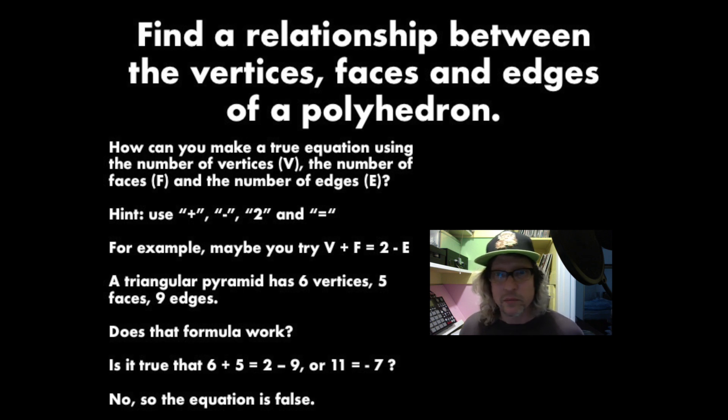Well, no, it doesn't. Because if I take the vertices, six plus the faces, five, I get 11. And then on the other side of the equation, I have two minus nine, which is negative seven. Is 11 equal to negative seven? Of course not. So that's not the correct formula there.